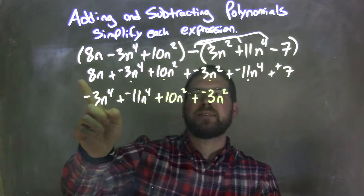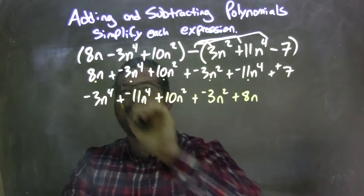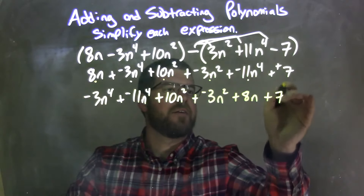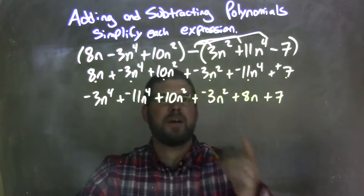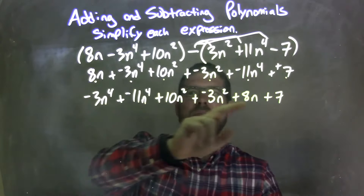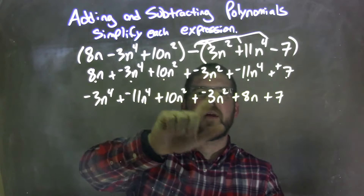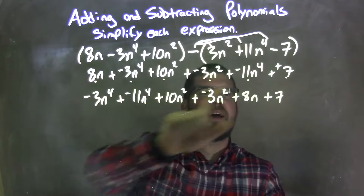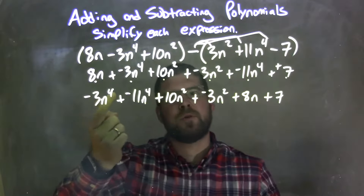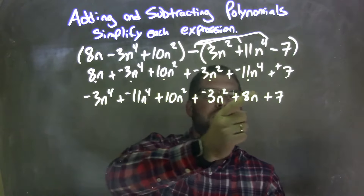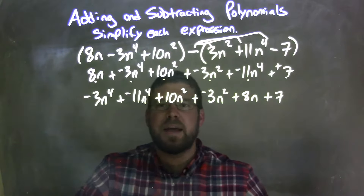Then the next highest degree is just the 8n, so we have plus an 8n here, and then plus a 7 at the end. Let's double check we have everything down — by using the dot system: 8n is right there, negative 3n to the 4th right there, 10n squared right there, negative 3n squared right there, negative 11n to the 4th — fantastic. And we double check: highest degrees first — fourth power, fourth power, second power, second power, first power, constant, or the 0th power.